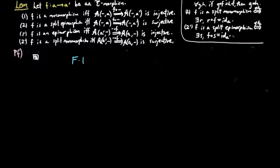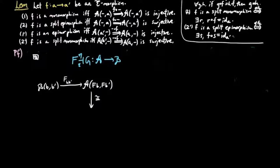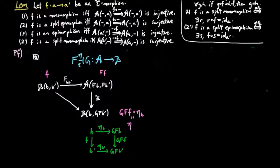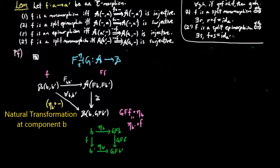Now let's return to the adjoint situation FG. If we take B objects B and B', the functor F induces a natural set map F_{BB'} between Homsets. We can then take our isomorphism induced by the adjoint situation to obtain a commuting triangle. By the definitions of the maps, we have the B-morphism F being taken to the B-morphism G∘F∘eta_B. But by naturality of eta, this equals eta_{B'}∘F. So the composition becomes equal to the post-composition by eta_{B'} natural transformation at component B.